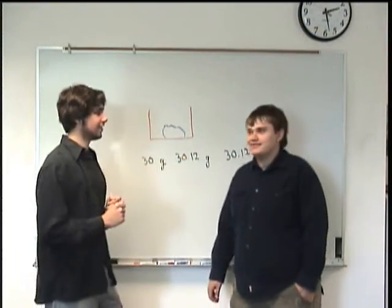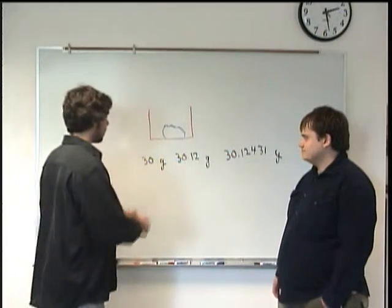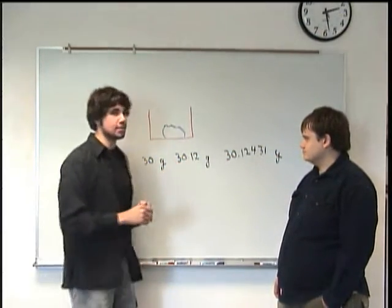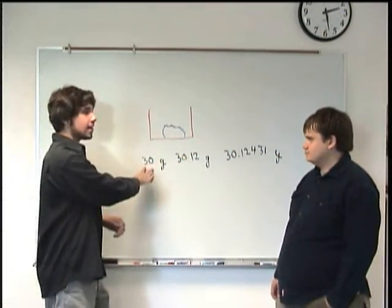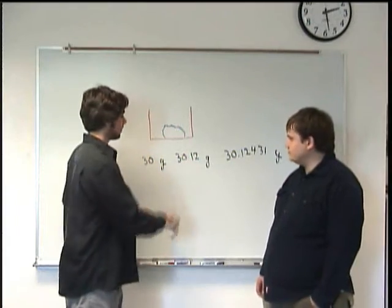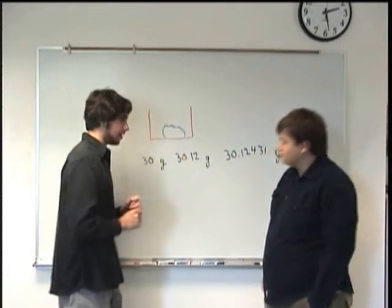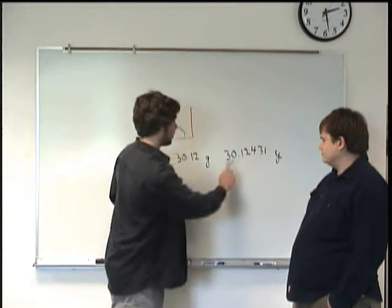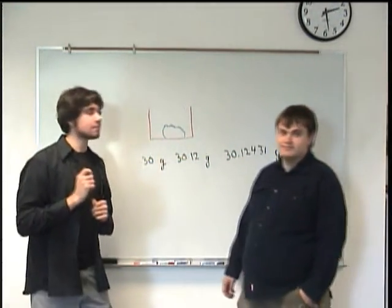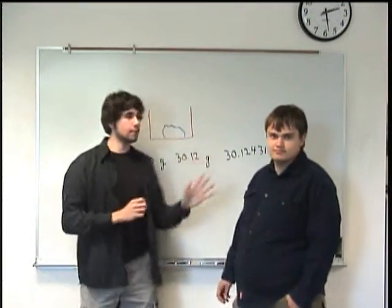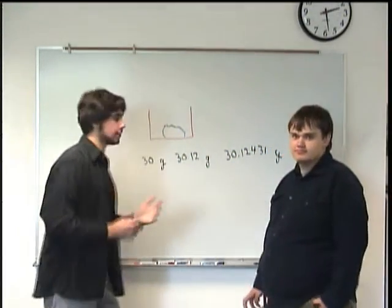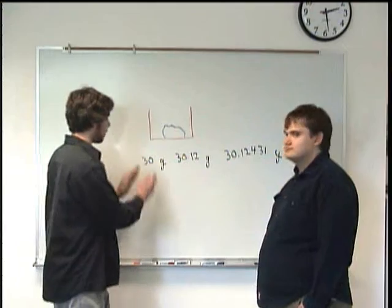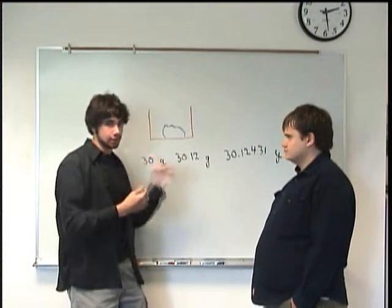So when we look at these three different examples here, this one has only one significant figure. Wait, only one? Only one. I'll explain that in a minute. This one has four. And this one has seven. So when you look at significant figures, there's different ways in which you want to do this. Basically, when you have whole numbers like this, no decimal at all, the zeros that come after the first non-zero number don't count. They're basically just placeholders.